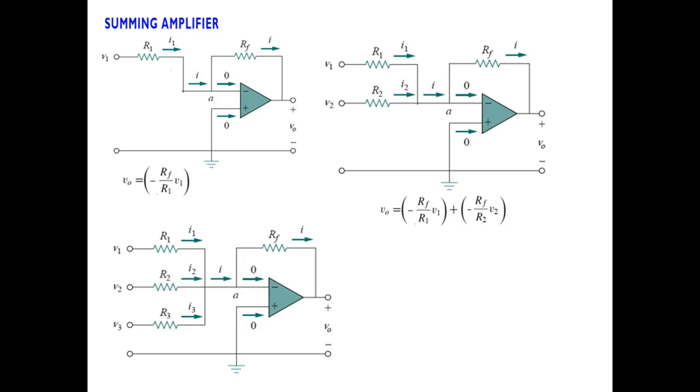In similar way, for three inputs we will have three terms. Remember that the denominator has different resistors connected with each voltage. V1 is connected with R1, so we divide by R1. V2 is connected by R2, and V3 is connected by R3. This is the final equation for V0. Since we are adding all three inputs, this is called a summing amplifier.